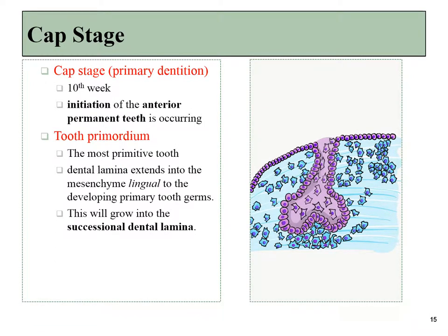By the end of the cap stage, we have the beginnings of all primary dentition — 10 caps in the maxilla and 10 in the mandible — establishing exactly where all primary teeth will form. At this stage, on the lingual side of the cap, increased growth of ectodermal cells begins forming the permanent dentition, even before the primary teeth have begun forming enamel or dentin.